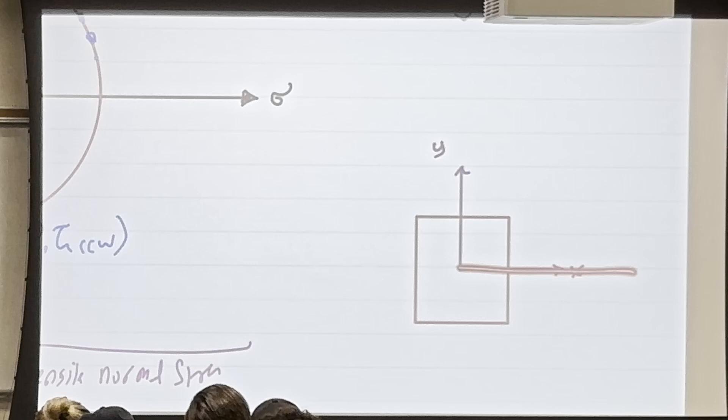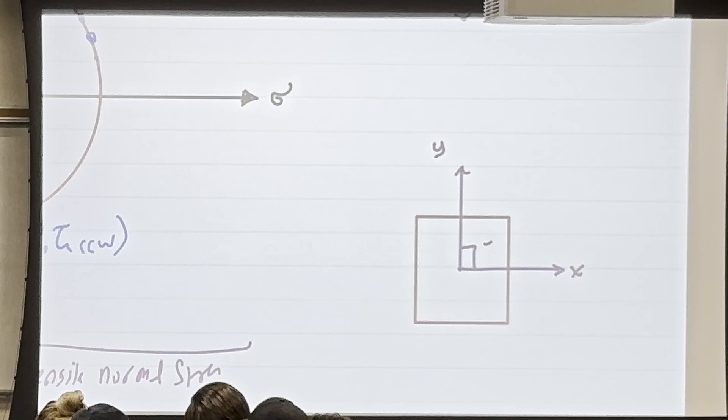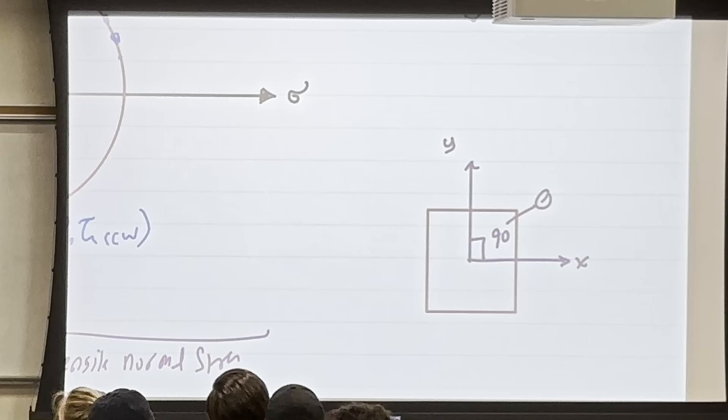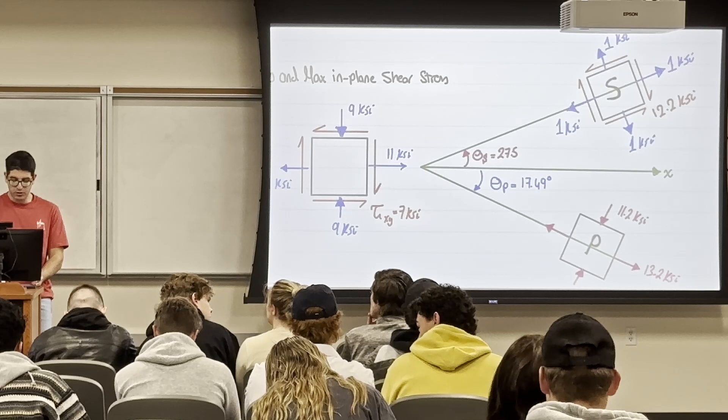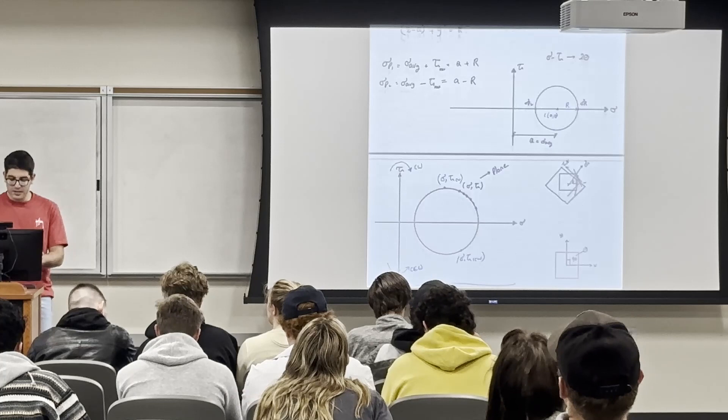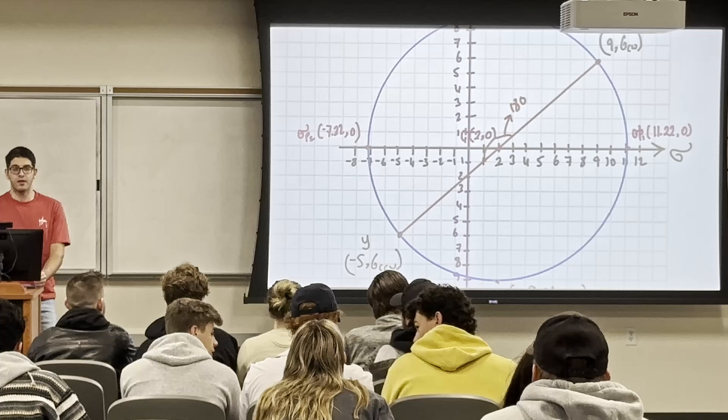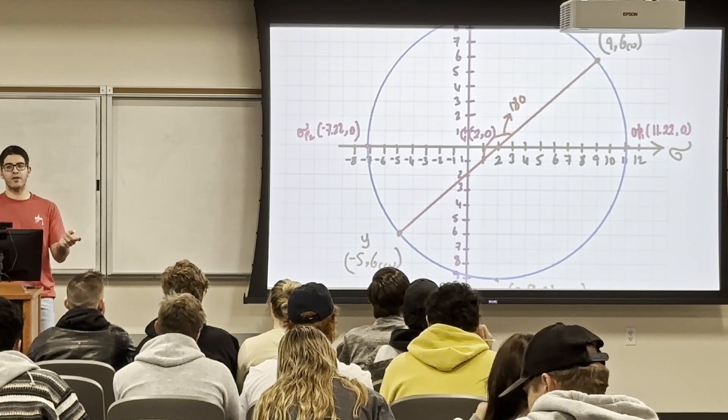For the y-face of the shear element: y went from (−5, counterclockwise) to (2, 9.22 counterclockwise). So the face has σ=2 tension and shear 9.22 counterclockwise. This agrees with what we found before: at the maximum shear element, σ_average appears on all faces (σ_average = 2). The maximum shear element is fully verified.